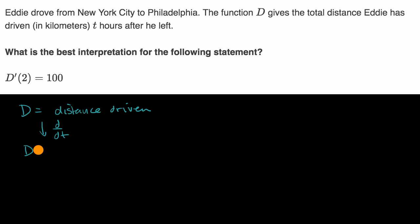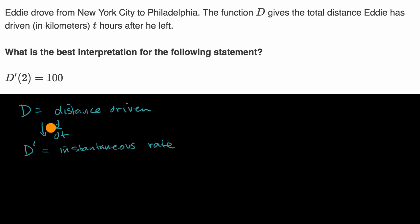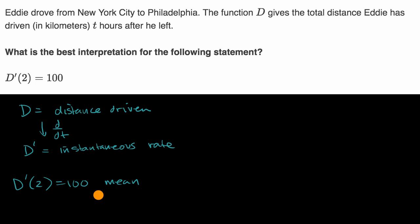We could view d prime as giving you the instantaneous rate, and both d and d prime are functions of t. So one way to view d prime of two equals 100 — well, what is our time? That is t, and it's in hours.